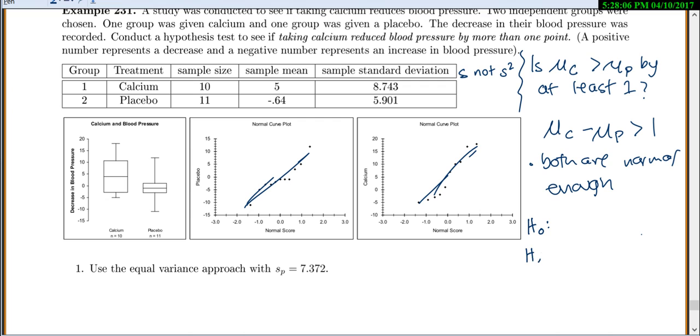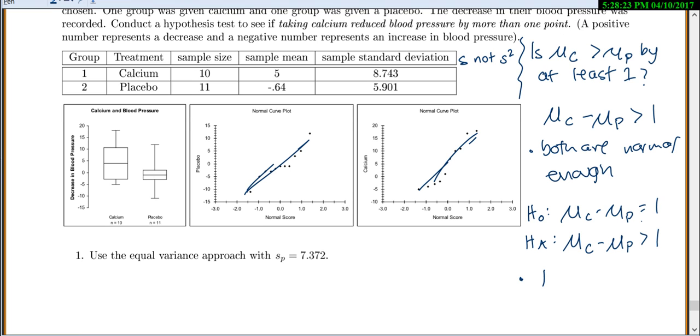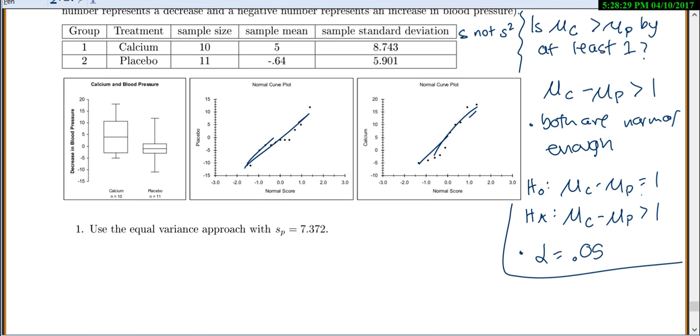Our null hypothesis and alternative. Our alternative is we're hoping to show that the mean for calcium is at least one higher than the mean for the placebo, which we write like this. The null is always the same, but you just put an equal, so it would be that the mean difference equals one. And let's just choose alpha equals 0.05.